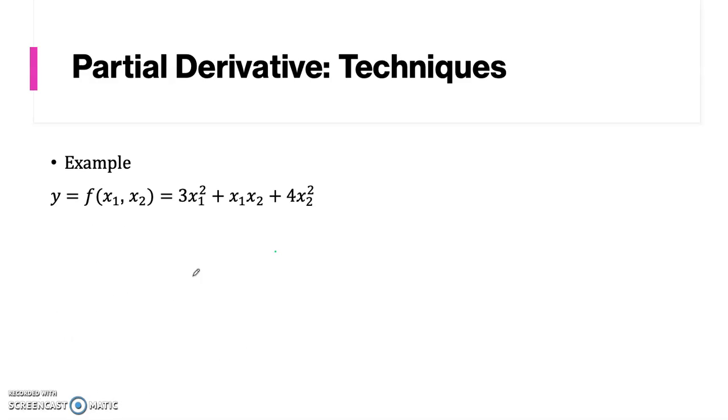For example, let's try to find the partial derivative of this equation. And what is the partial derivative of dou y with respect to x1 and dou y with respect to x2? This should be x2.